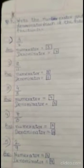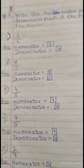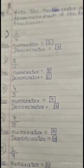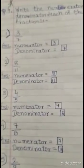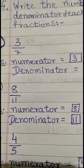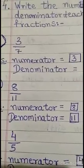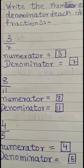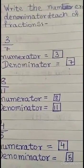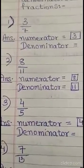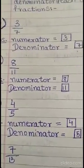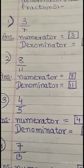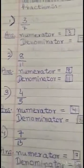Children, page 55, question number 4. You will write it this way. See the first question — question number 1: 3 upon 7. Then you will write numerator 3, denominator 7. Question number 2: 8 upon 11 — numerator 8, denominator 11. So children, in this way you will do the remaining sums.